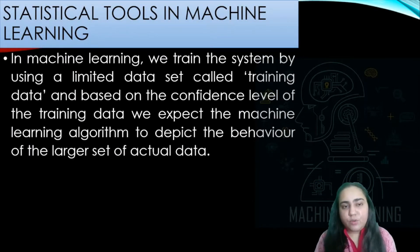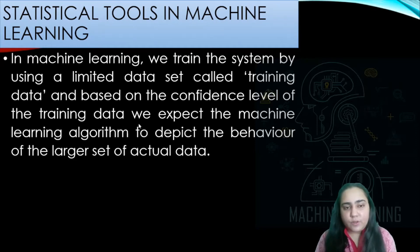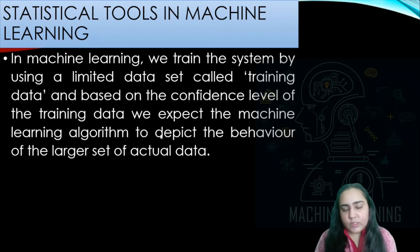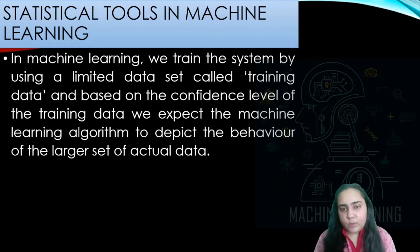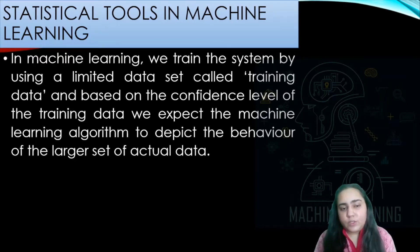In machine learning we train the system by using a limited dataset called training data, and based on the confidence level of the training data we expect the machine learning algorithm to depict the behavior of the larger set of actual data. There is training data which is limited, but then you expect the algorithm to perform well on actual data which is much larger than the training data.